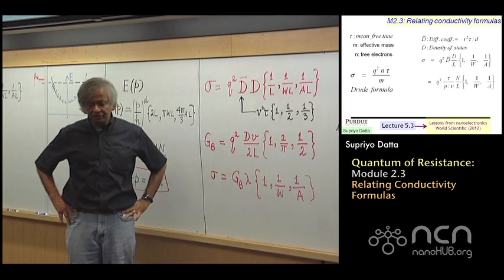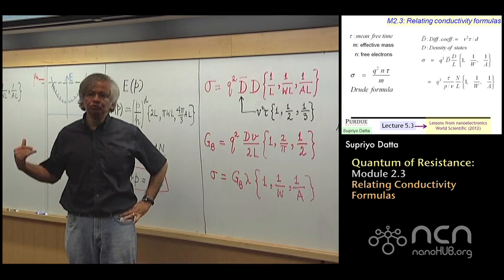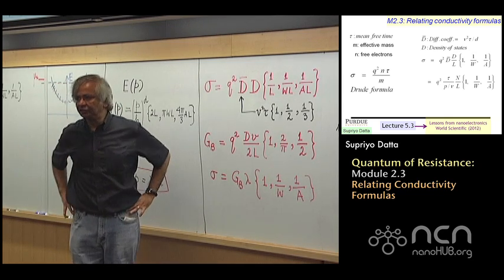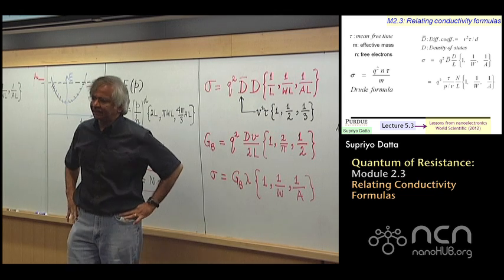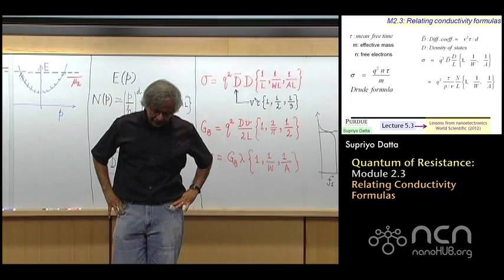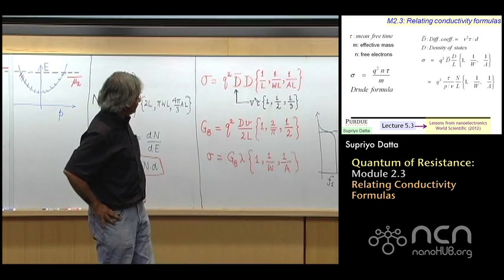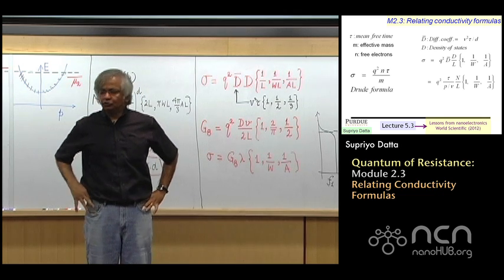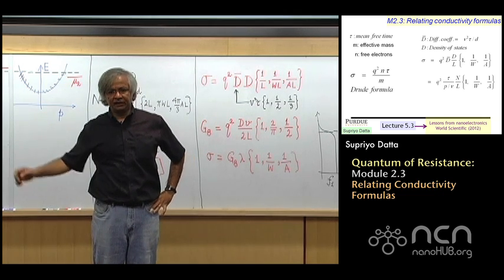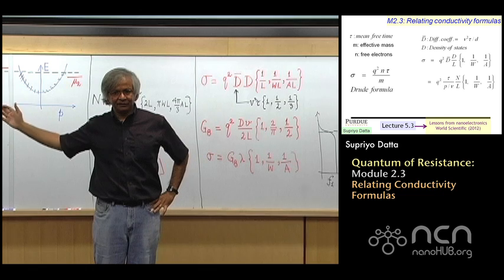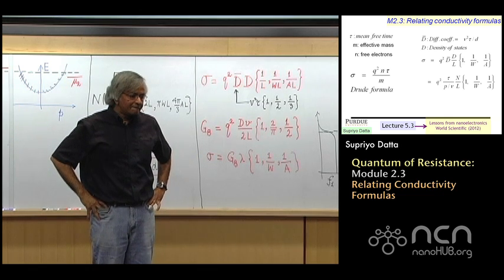But usually people remember the Drude formula. That's what they usually think in terms of. And the reason is something like this. That in the normal approach, the Drude formula is relatively easy to obtain. In fact, I'll explain to you in a minute how we get that.